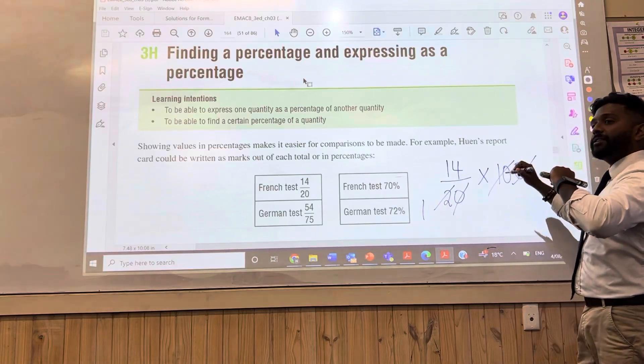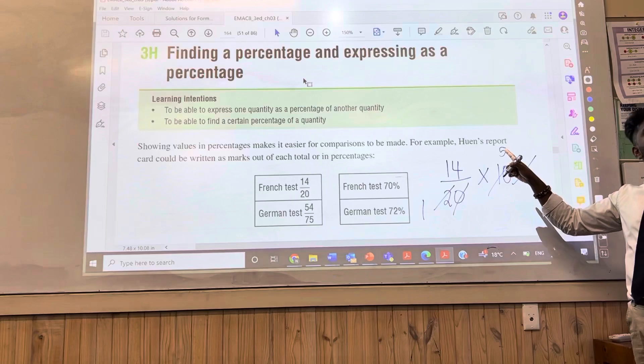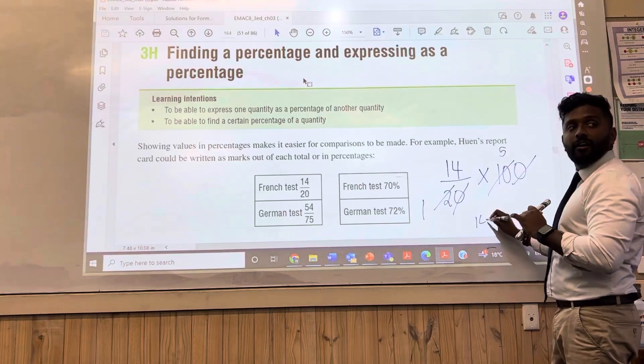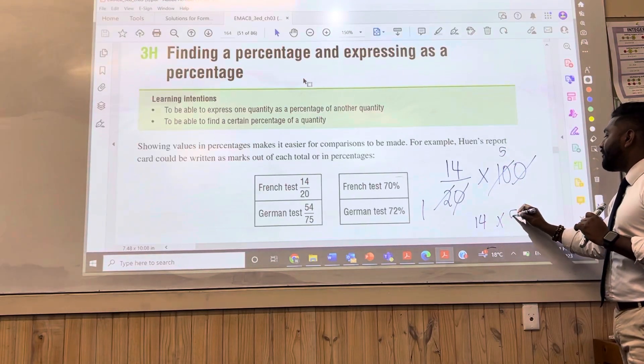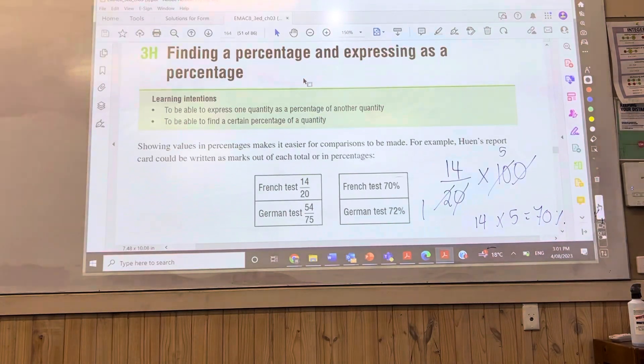2 divided by 2 is what? 1. 10 divided by 2 is? 5. Now we don't have to... Can you put that down? So now we're going to do 14 times 5. And that should give you 70%. Wow. That is how you can express it. That's the second method.